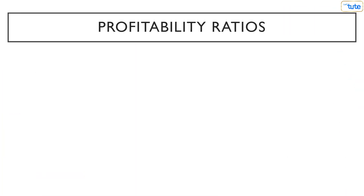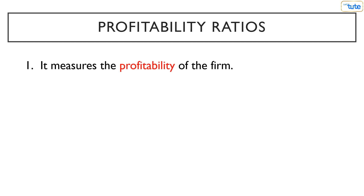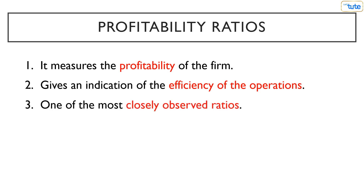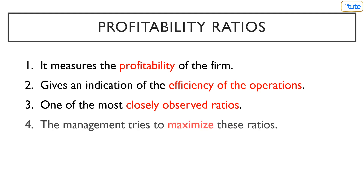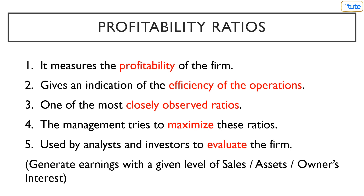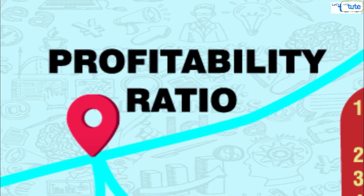Now let's begin with understanding the concept of profitability ratios. The profitability ratios, as the name suggests, measure the profitability of the firm. They give an indication of the efficiency with which the operations of the business are carried on, and these are one of the most closely observed and widely quoted ratios in financial analysis. The management also tries to maximize these ratios to maximize the company's value. Profitability ratios are used by analysts and investors to measure and evaluate the ability of a company to generate earnings with reference to a given level of sales, assets, or owner's interest.